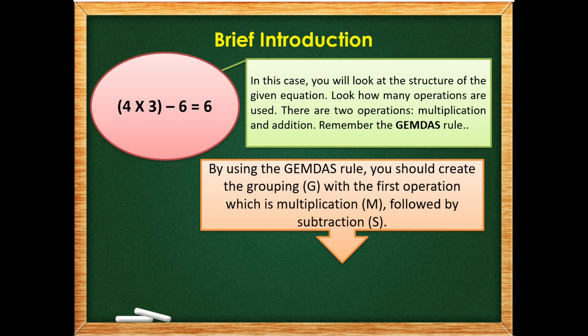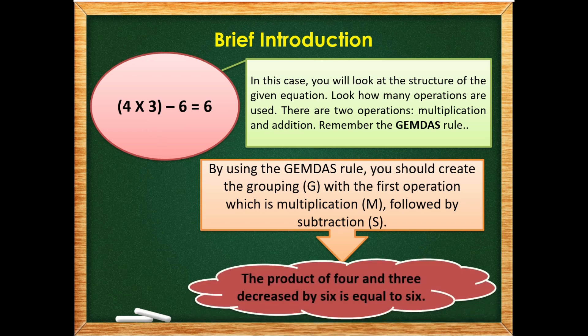So again, in this case, we're going to translate numbers into phrase. So we have the product of, the product of 4 and 3, decreased by 6, is equal to 6. So I hope you have understood our lesson.